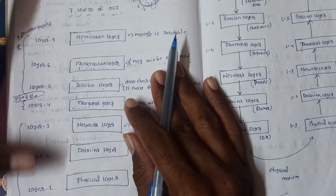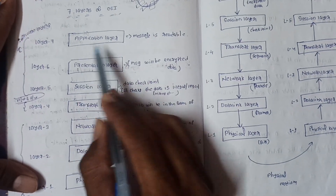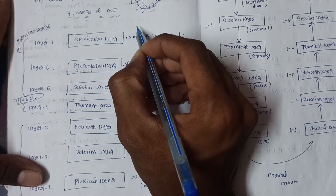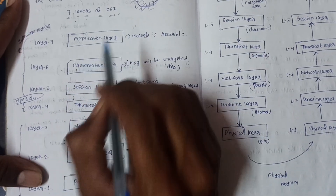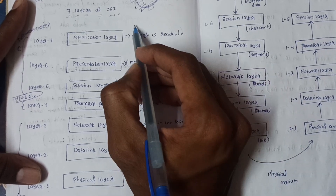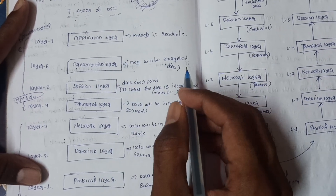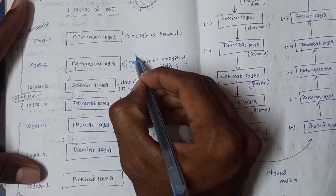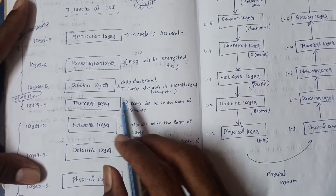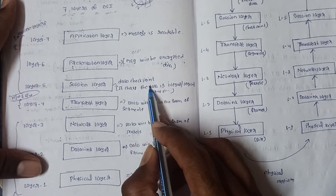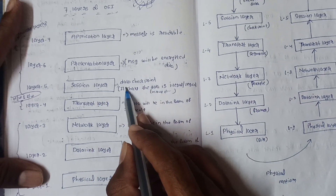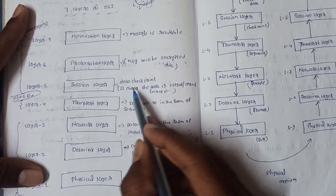Starting from the top — Layer 7 is the Application Layer, where the user types the message. Next is the Presentation Layer, where the message will be encrypted — converted into bits, like a password type. Then comes the Session Layer, which checks whether the data is valid, invalid, or contains a virus.